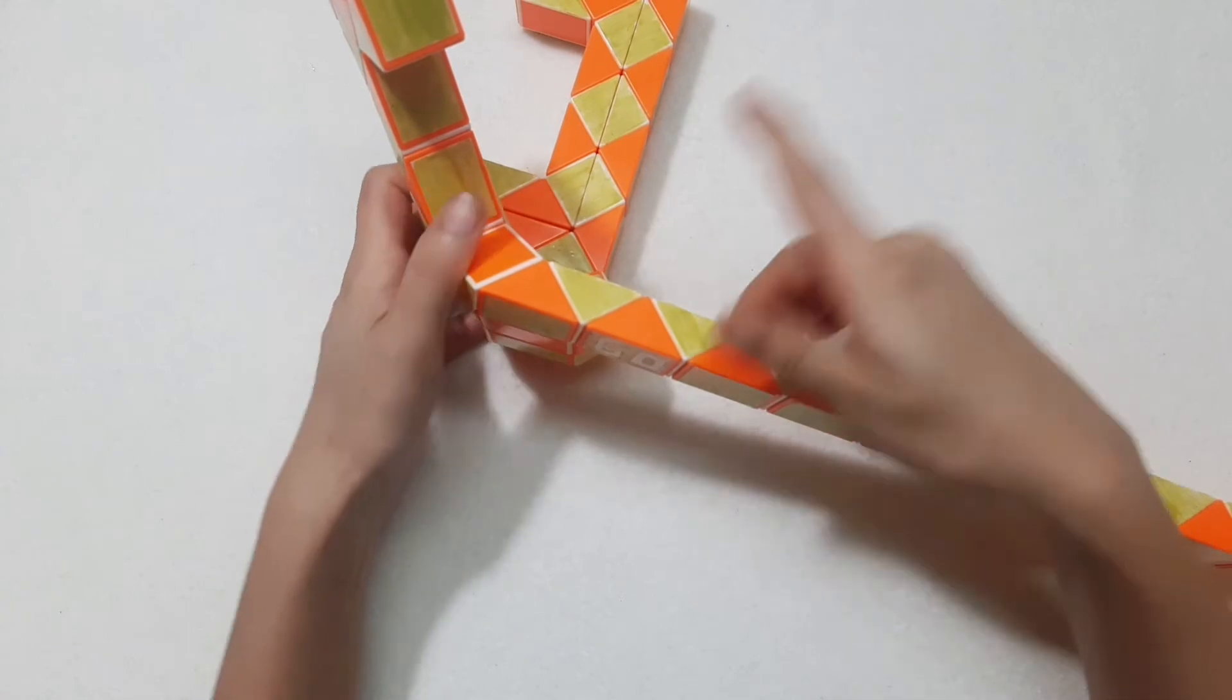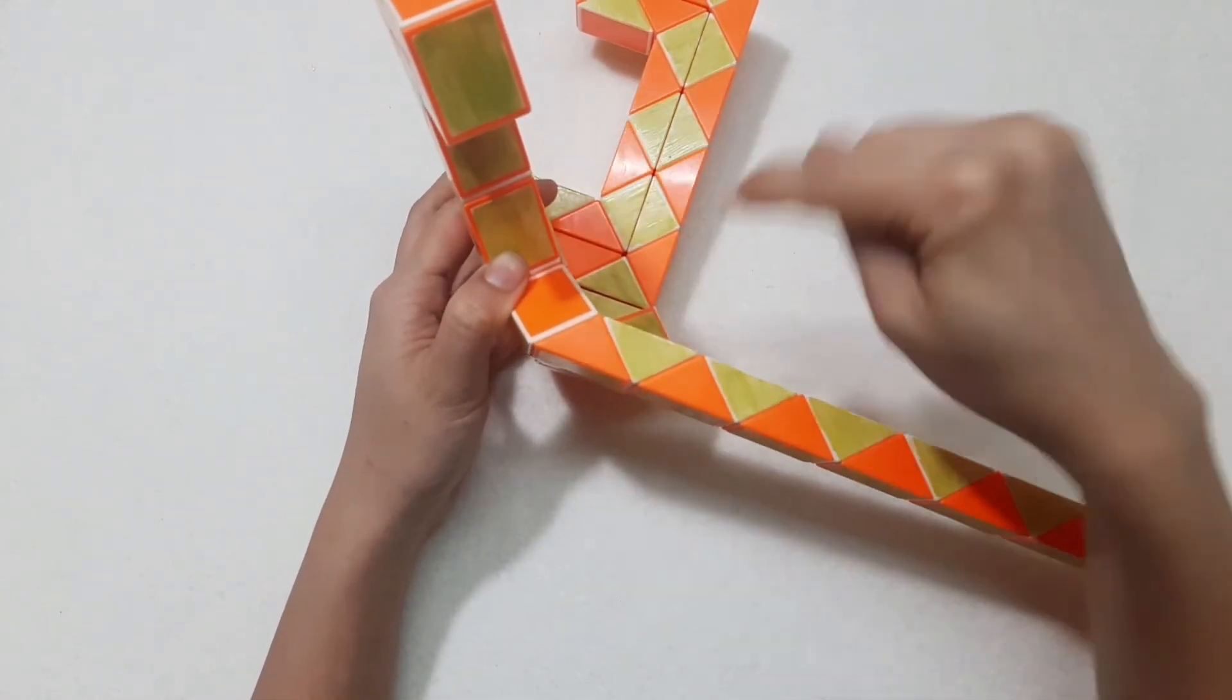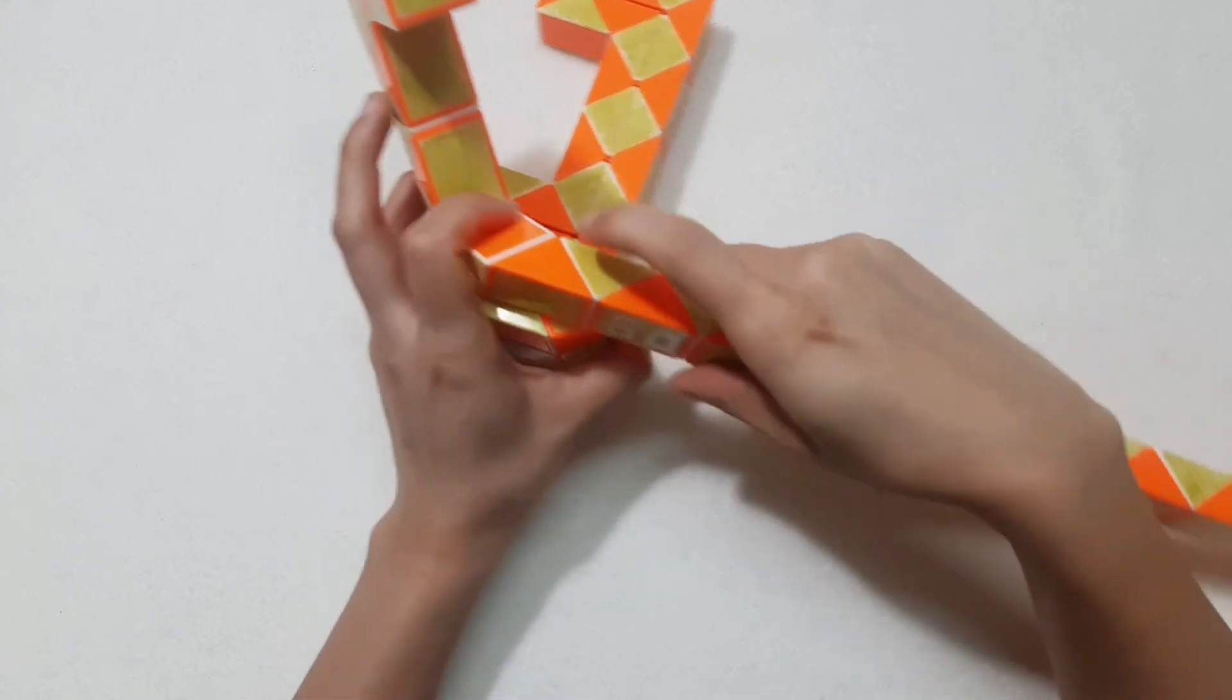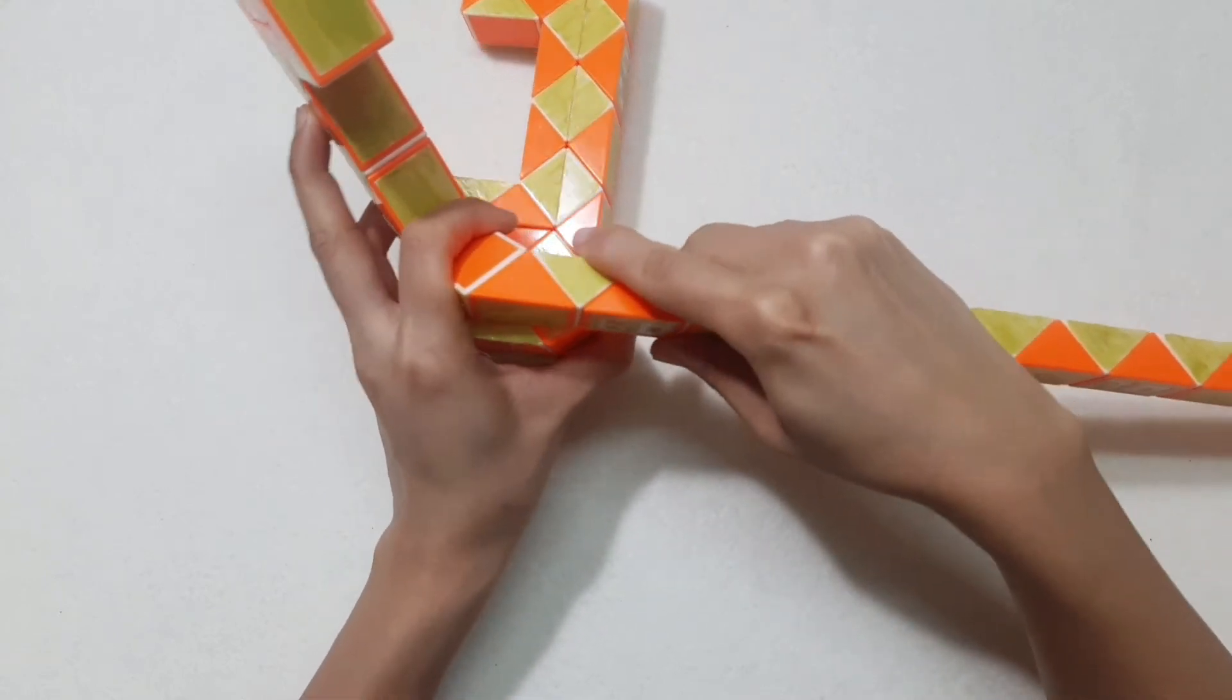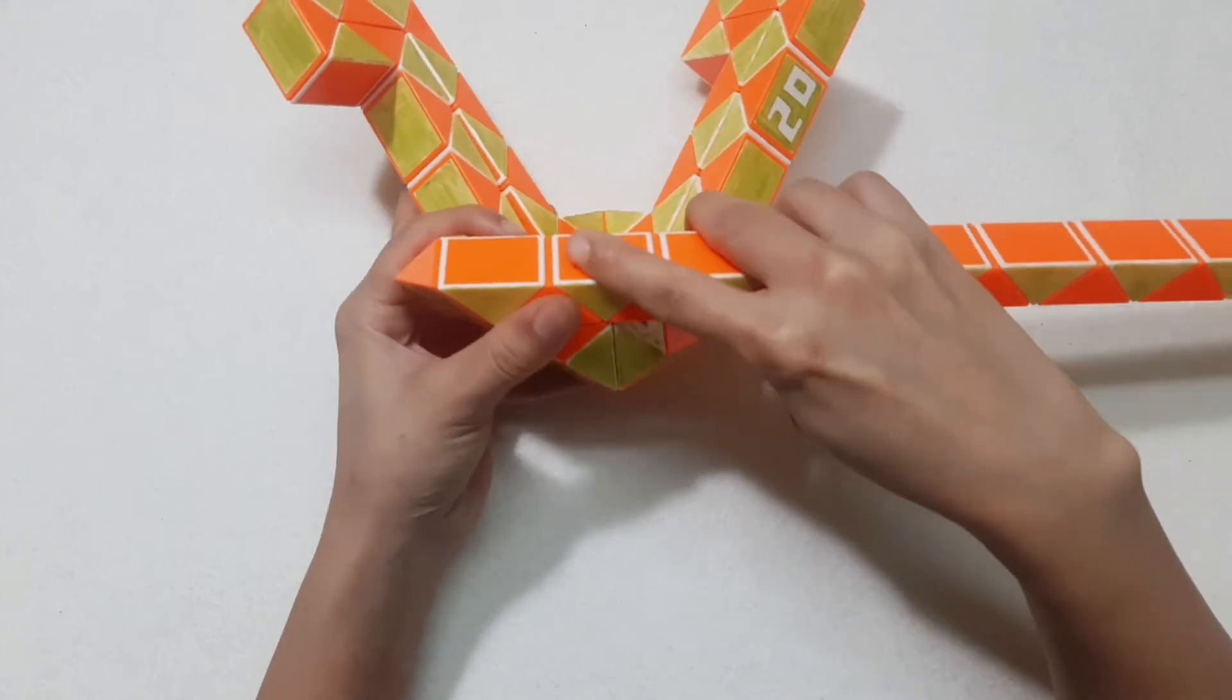Now we're attempting to make the last one like this. So, number here. 3, 1, go down. 1, 2, 3, go up.